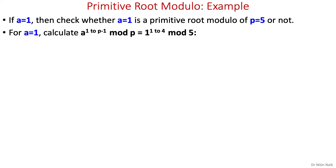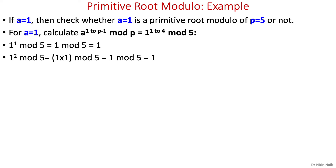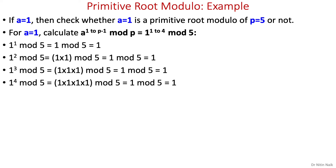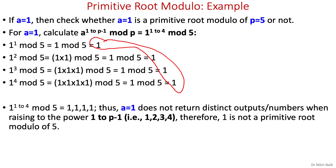Let's check a equals 1. Calculate 1 to the power 1 through 4 mod 5: 1¹ mod 5 = 1, 1² mod 5 = 1, 1³ mod 5 = 1, 1⁴ mod 5 = 1. All outputs are the same, so it doesn't satisfy the second condition. Therefore 1 is not a primitive root modulo of 5.